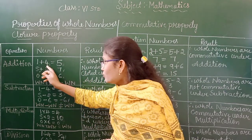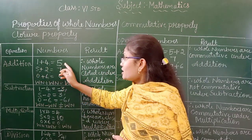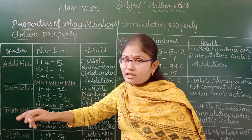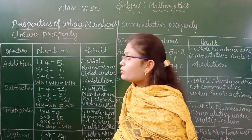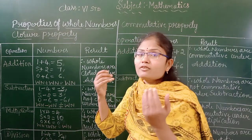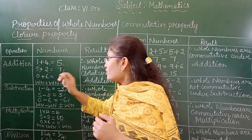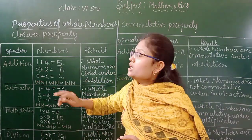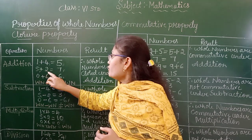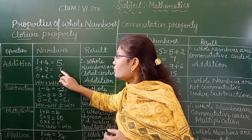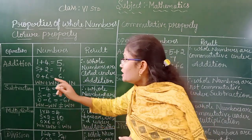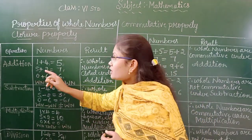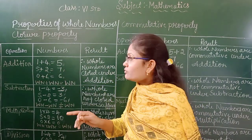If you add any two whole numbers, the result is also a whole number. For example, 5 and 2 — if you add 5 and 2, you are going to get 7. 5 and 2 are whole numbers, and 7 is also a whole number.